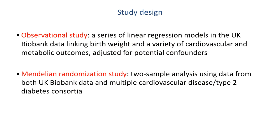Mindful of these challenges, the authors first conducted an observational study in a large-scale UK Biobank cohort, with a sample size exceeding 230,000 individuals, carefully adjusting for some of the confounders shown on the previous diagram. But since even the most thoughtful adjustment cannot exclude bias due to residual confounding, they also implemented a Mendelian randomization study to better approach estimates of causal effects. That study was done in both UK Biobank and in data from various large-scale genetic consortia of cardiovascular and metabolic disease.